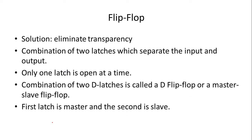The solution is to eliminate transparency — this is called a flip-flop. A flip-flop is a combination of two latches that separates input and output. Since a D latch works fine for half a cycle, attaching two latches where one works for high clock and the other for low means only one latch is open at a time — no transparency. This combination of two D latches is called a D flip-flop or master-slave flip-flop. Flip-flops are very important and capable of holding one bit of data, and will be discussed in next sessions.